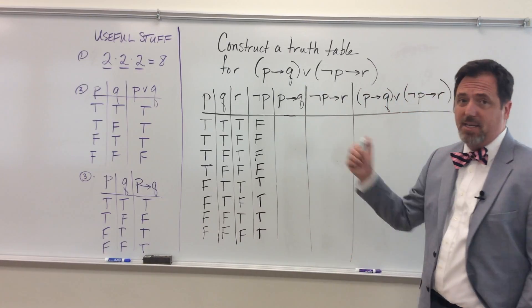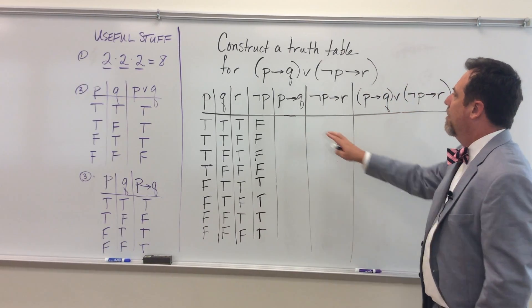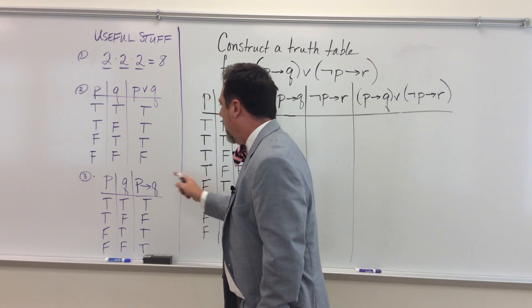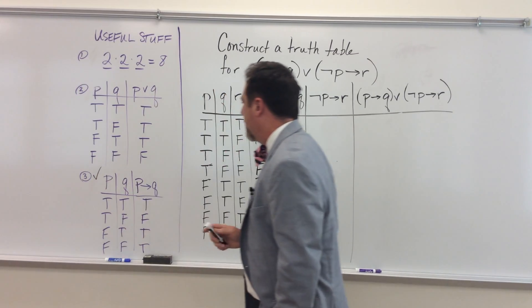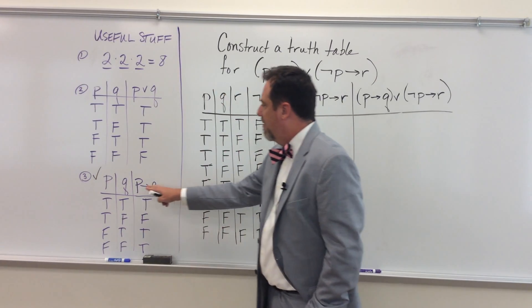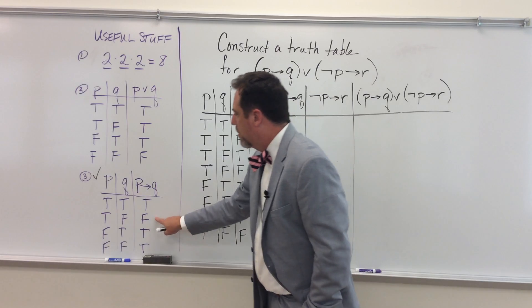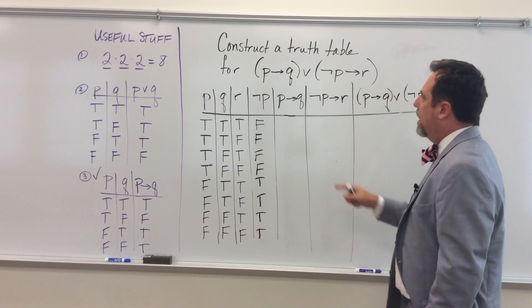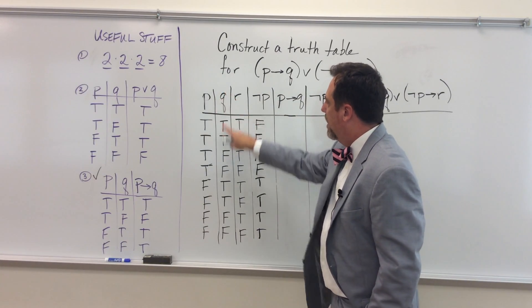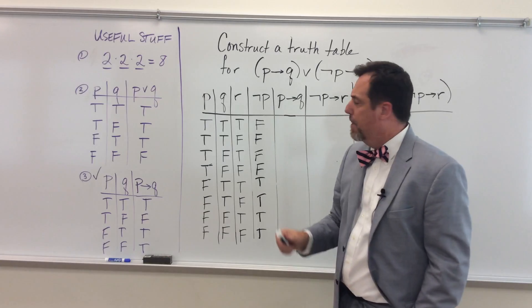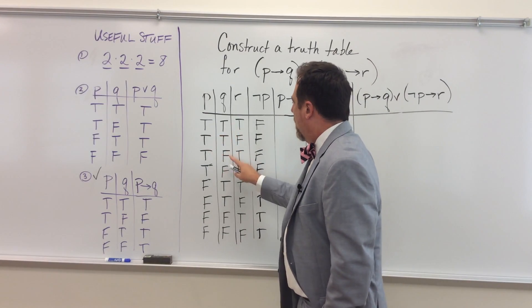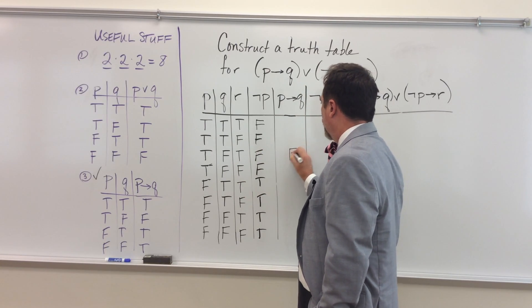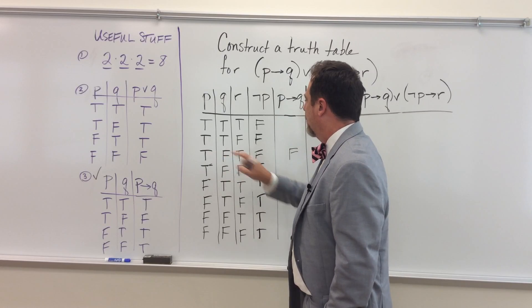Now, for the conditional P implies Q, I have a little cheat sheet over here. Notice that the only time that if P then Q is false is when the hypothesis is true but the conclusion is false. So quickly I'm going to figure out where that is. Here's my P and here's my Q for truth values. Well, I'm fine everywhere except for the third row down. So I'm going to try to line that up. And that's false because you can't have true implies false.